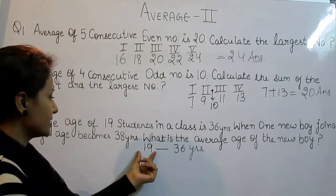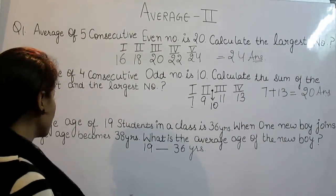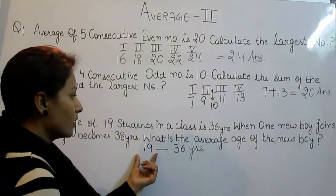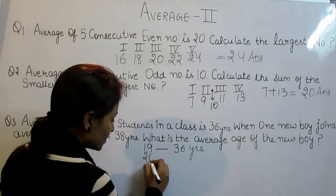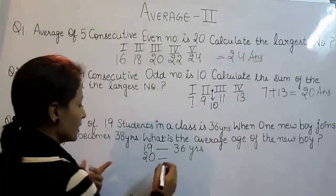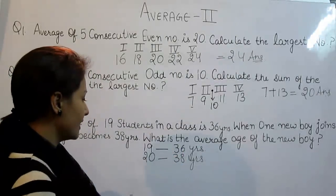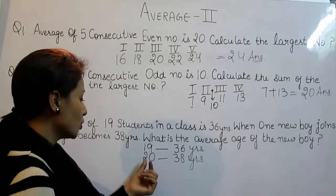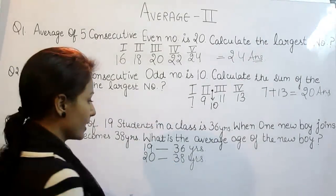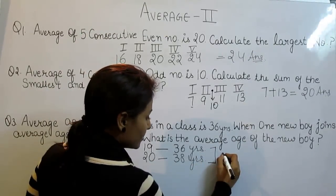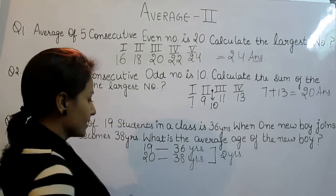The average age of 19 students in a class is 36 years. When one new boy joins, the average age becomes 38 years. With 20 students total, the average becomes 38 years. The average has increased from 36 to 38 years, meaning the average is increased by 2 years.